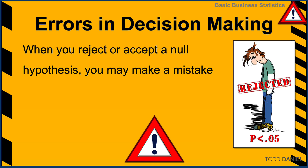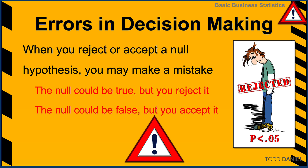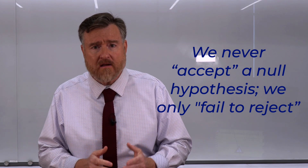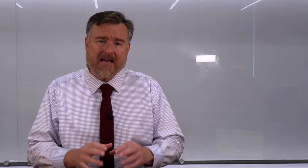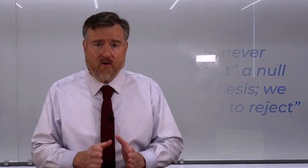When you reject or accept a null hypothesis, you can make a mistake. The null hypothesis could be true, but you reject it. Alternatively, the null hypothesis could be false, but you accept it. Now I know that I'm being sloppy with my language here, because last time I stressed that we never accept a null hypothesis — we only fail to reject. However, I'm being deliberately sloppy for this example, making it more clear at the expense of specificity. You know that we don't accept a null hypothesis; we fail to reject. It's just going to be easier for our learning if we use these somewhat sloppy terms.